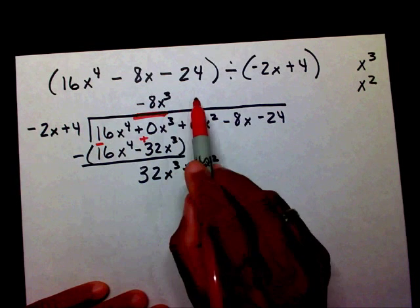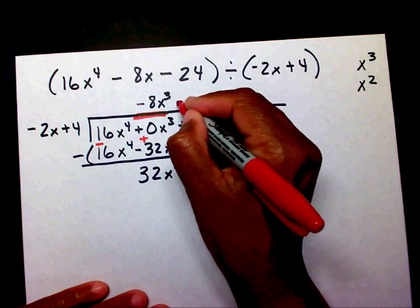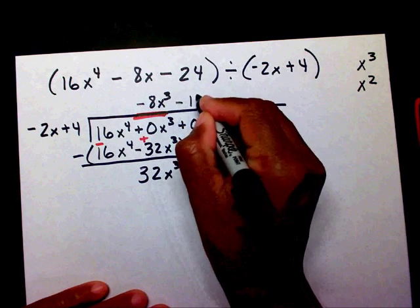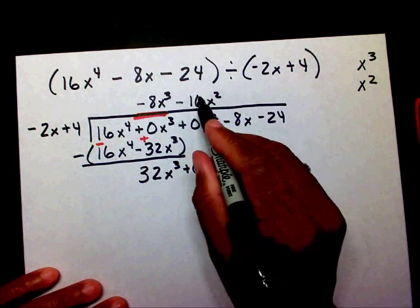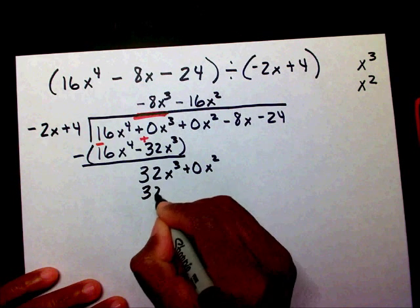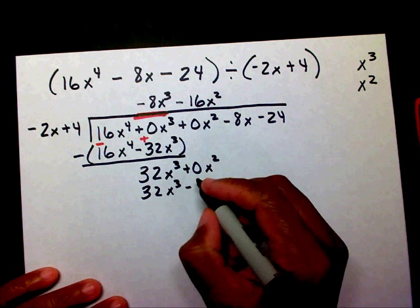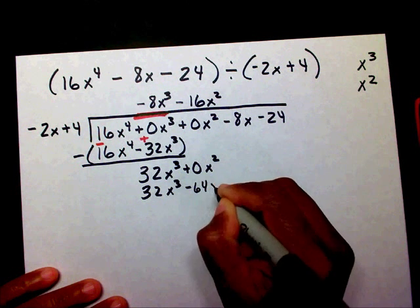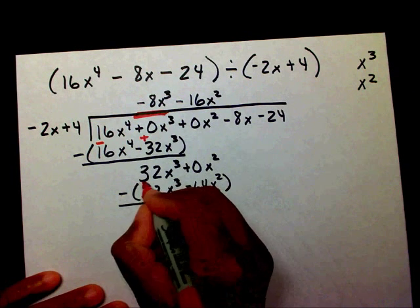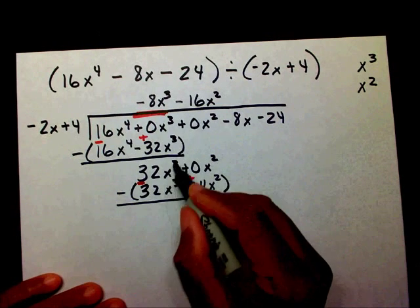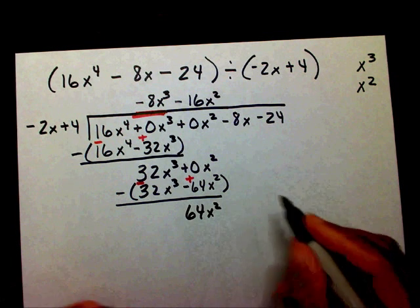I need to know what number times negative 2x will give me a positive 32x cubed. And that number is going to be negative 16x squared. Negative 16x squared times negative 2x will give me a positive 32x to the third. Negative 16x squared times 4 will give me a negative 64x squared. I'm going to distribute my negative, so that will become a negative and that will be a positive. The x cubes cancel. That leaves me with 64x squared minus 8x — bring down my minus 8x.